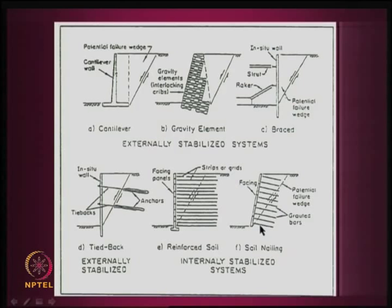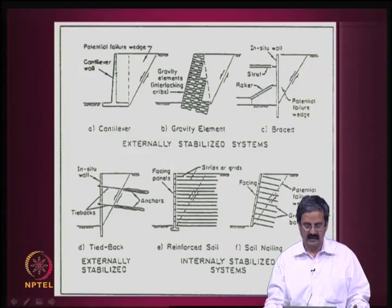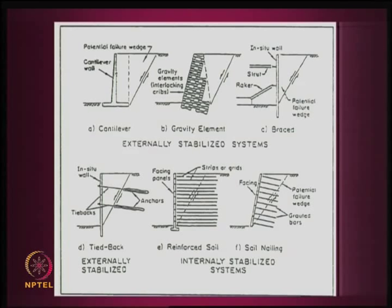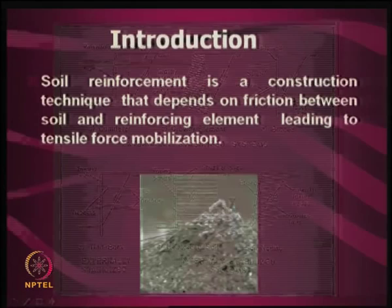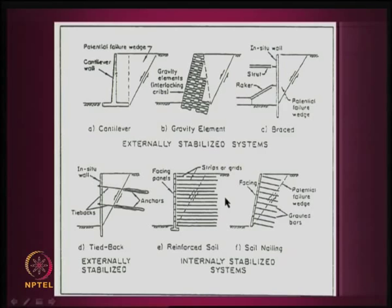Over a period of time, people have seen that stabilizing soil using internal techniques is much cheaper. As you increase the height — say beyond 3 to 4 meters, or even 10 to 15 meters — internally stabilized systems are definitely going to be 30 percent cheaper and easier to construct. For conventional walls, as height increases you may need a counterfort retaining wall, but for internally stabilized systems, whether it is 10, 20, or 30 meters, it is the same technique, though the factor of safety must be calculated properly.